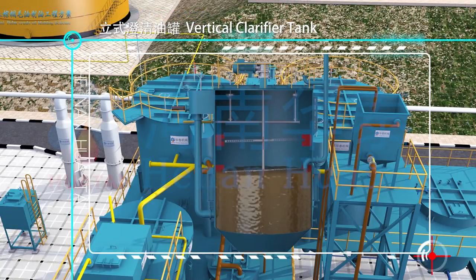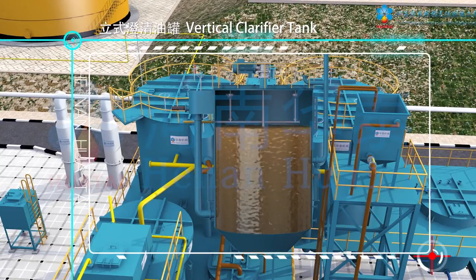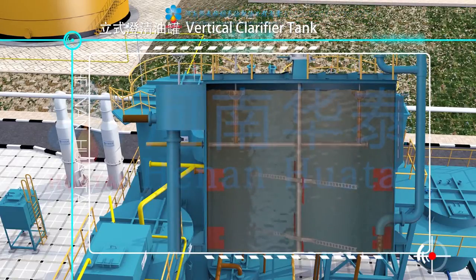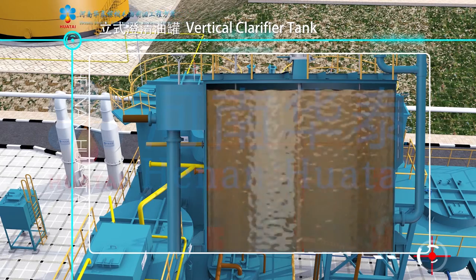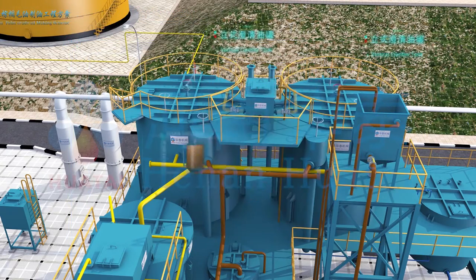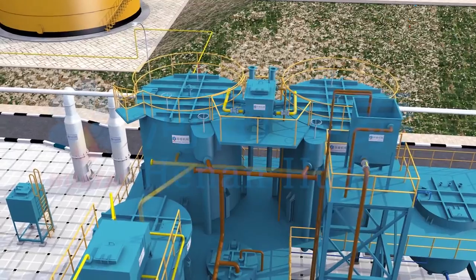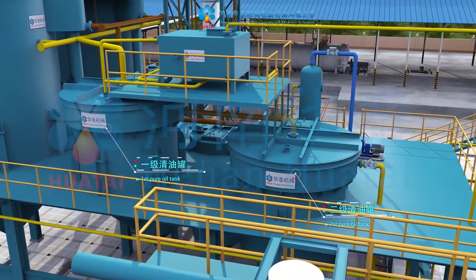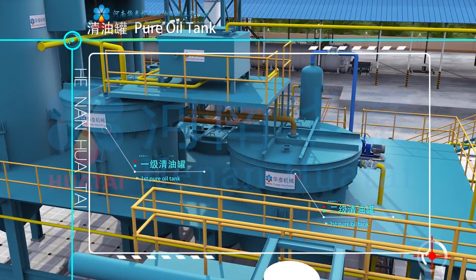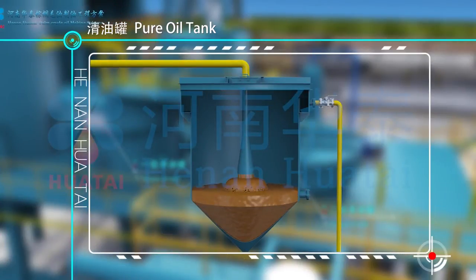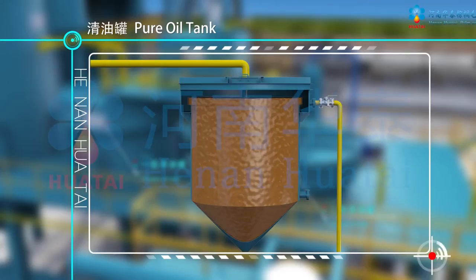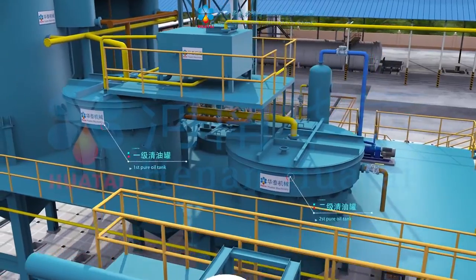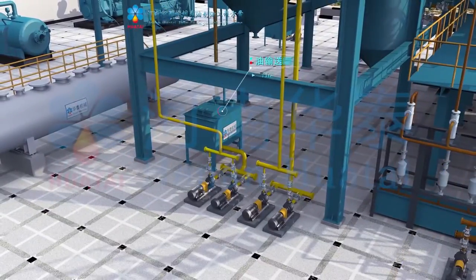Through heating, stirring, and treatment in the vertical clarifier tank, clear oil rises to the top while dirty oil and water settle down. Clear oil goes through the oil skimmer and enters the pure oil tank. After entering the first stage clear oil tank for heating and precipitation, it overflows to the next clear oil stage for reprocessing, and clear oil overflows into the oil transfer tank.